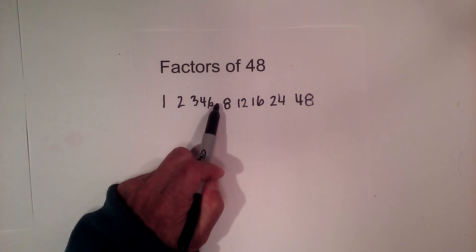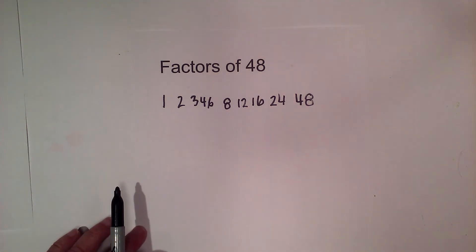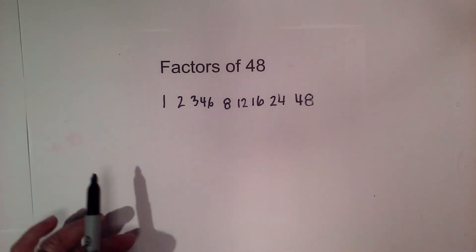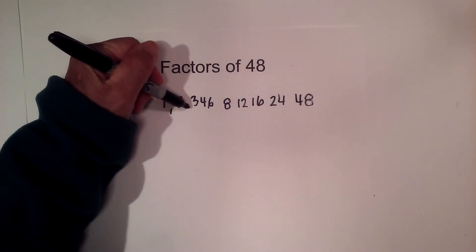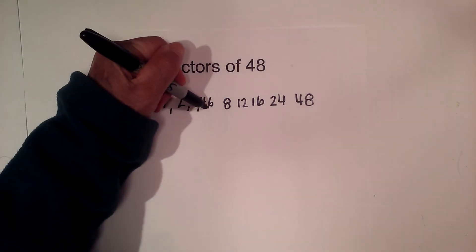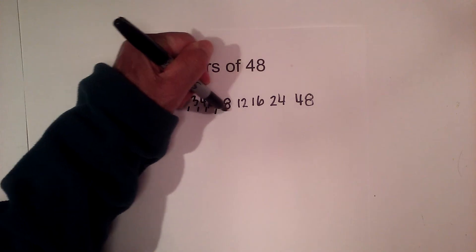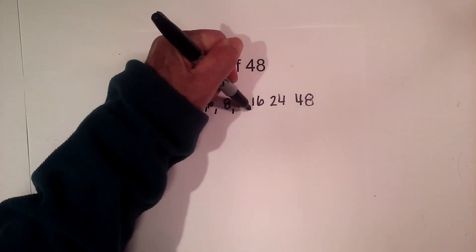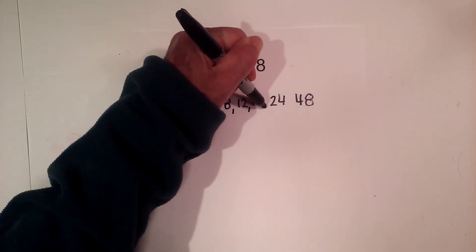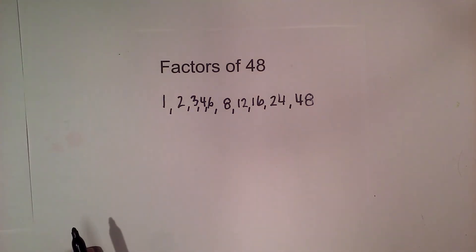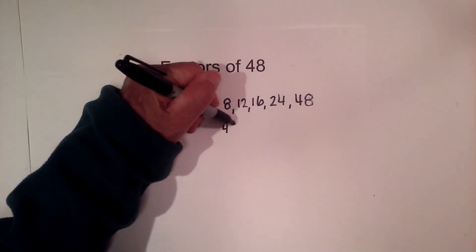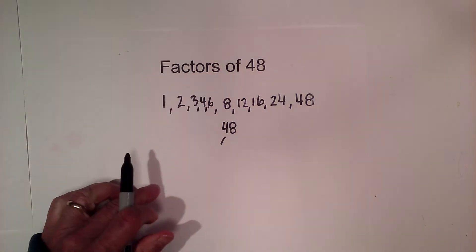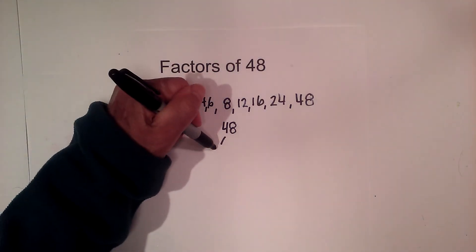7 does not go into 48. So the factors of 48 are 1, 2, 3, 4, 6, 8, 12, 16, 24, and 48. Now let's find the prime factors — I like to use a factor tree. 2 times 24 equals 48.